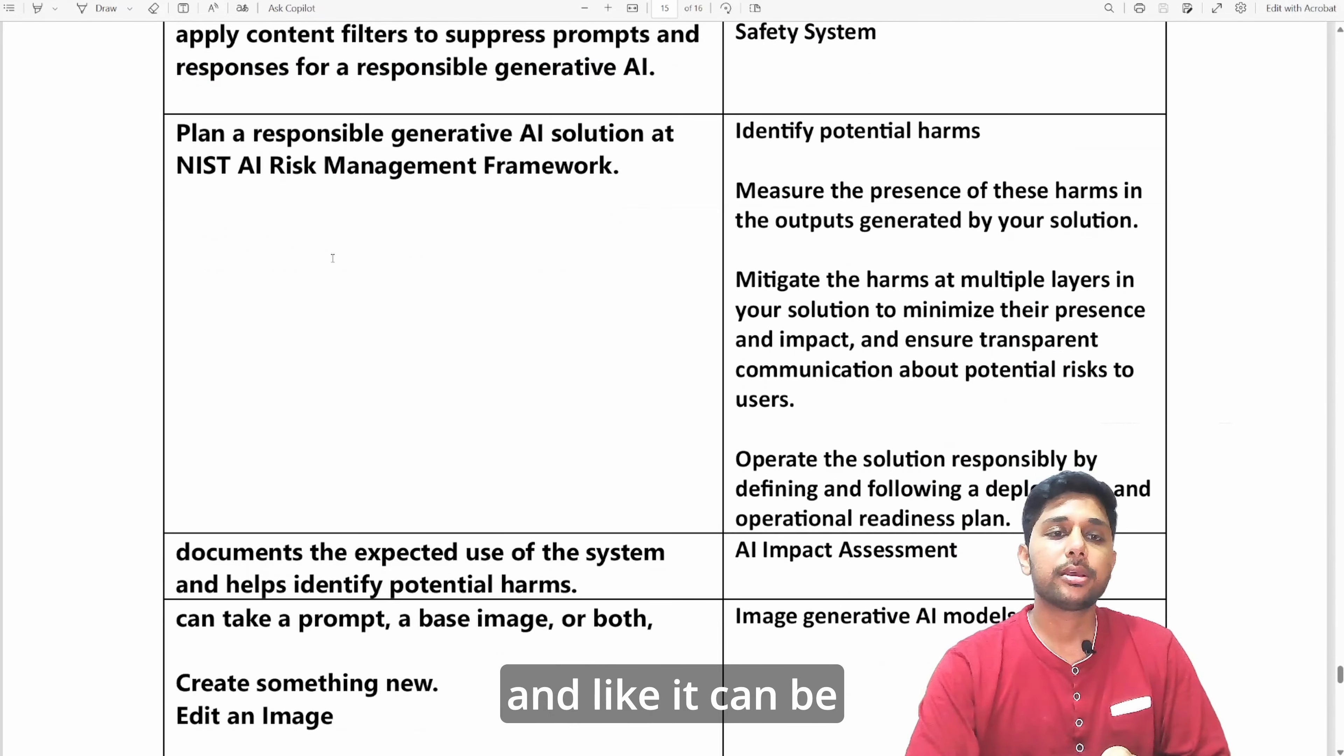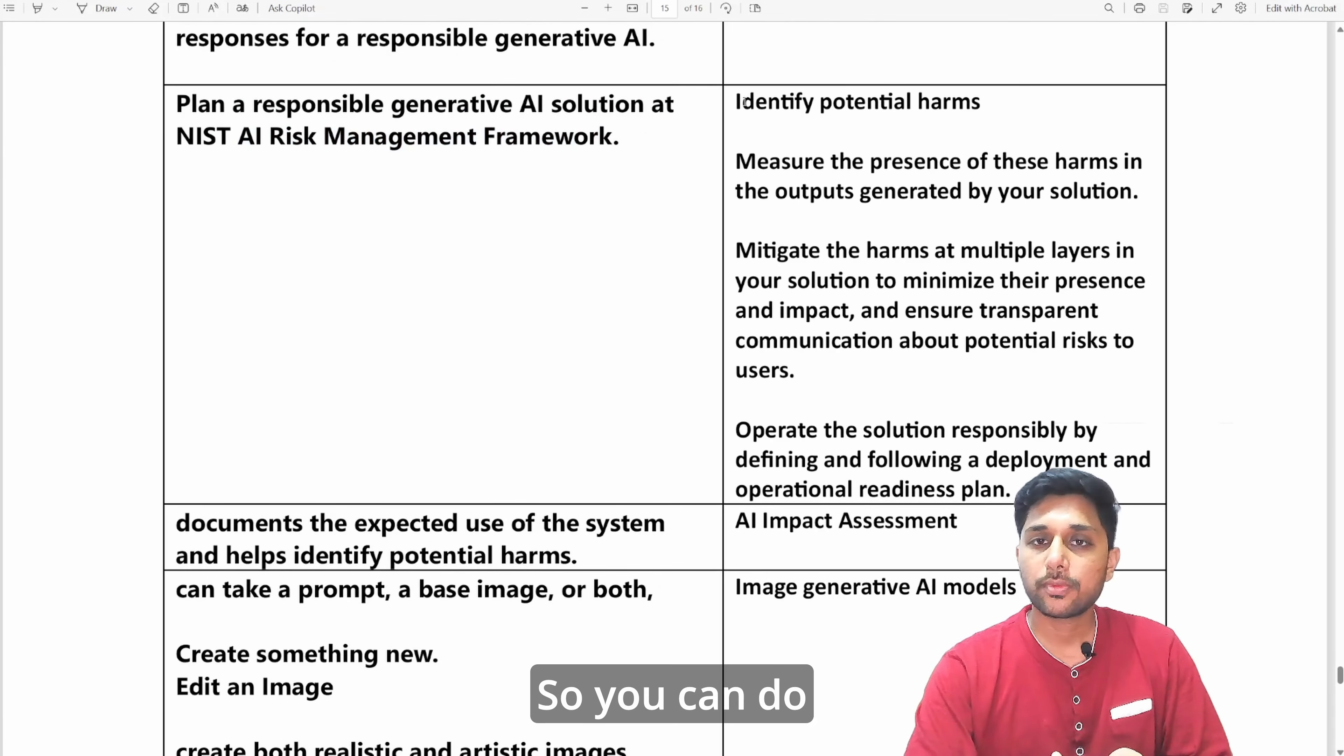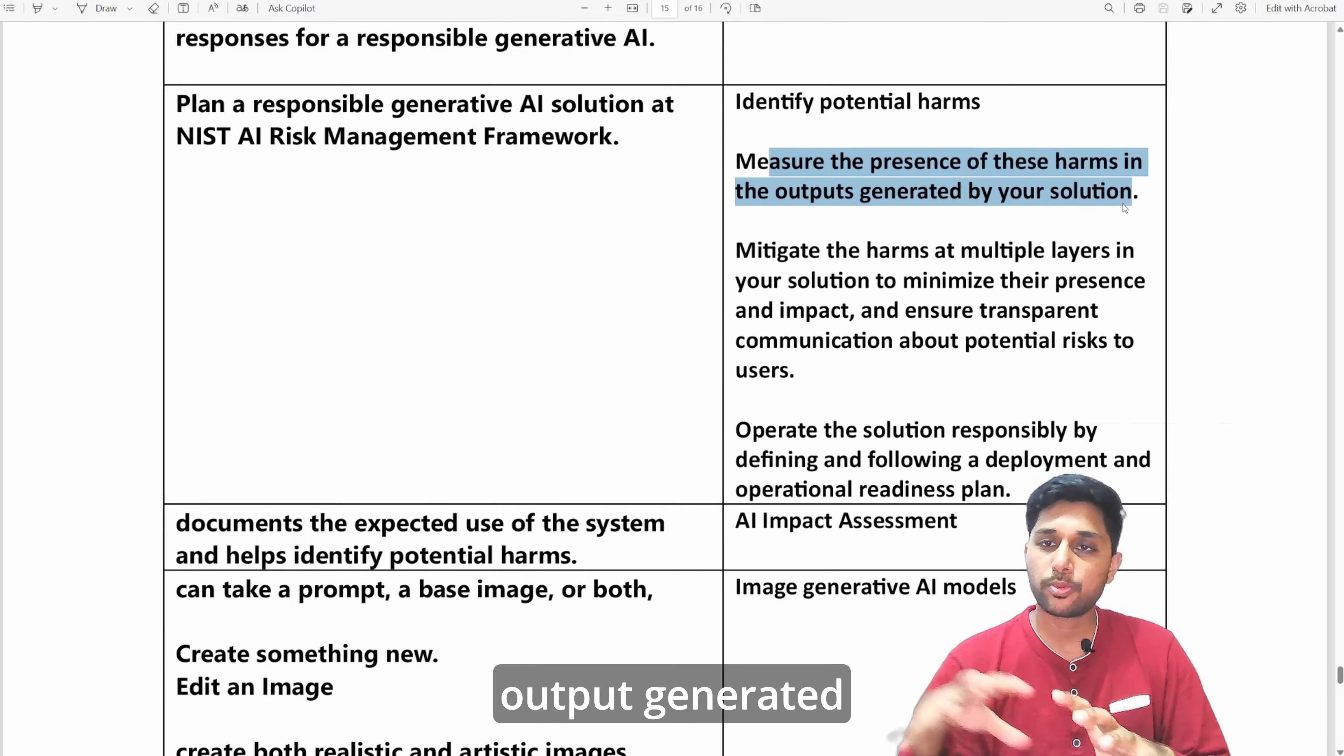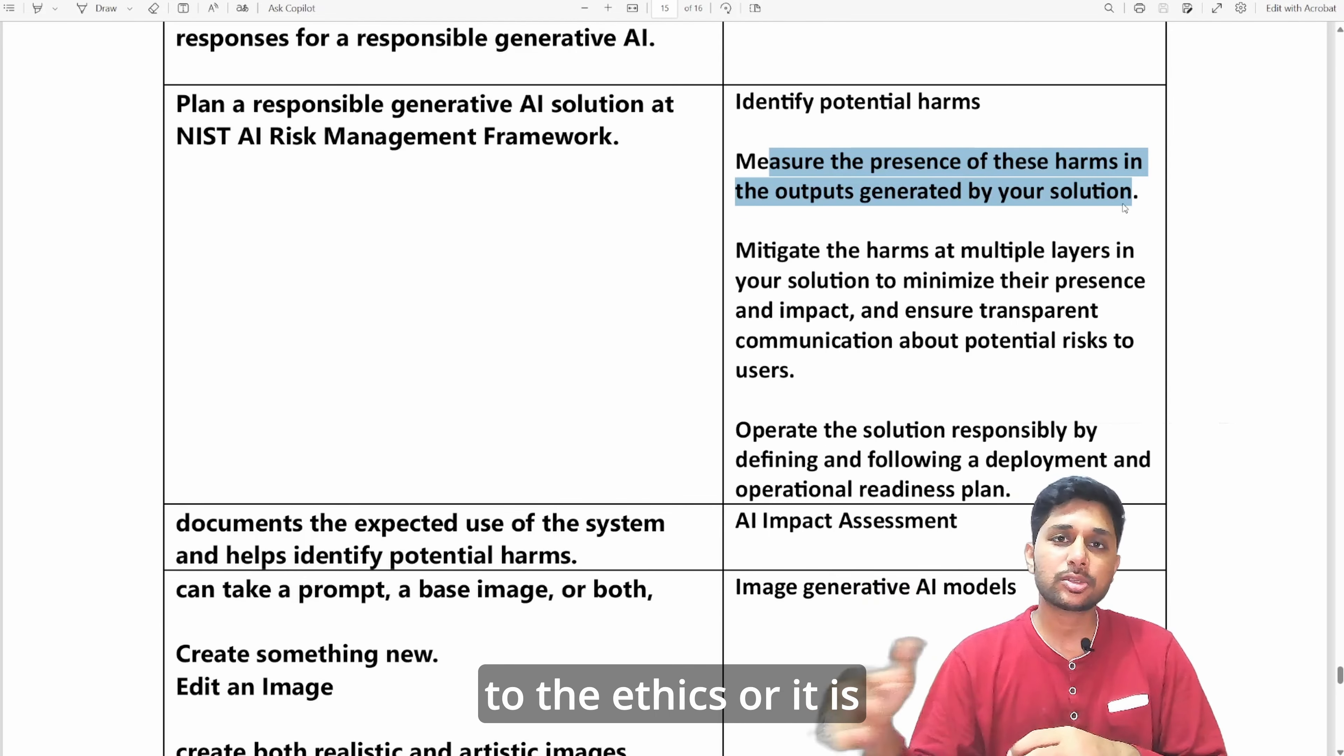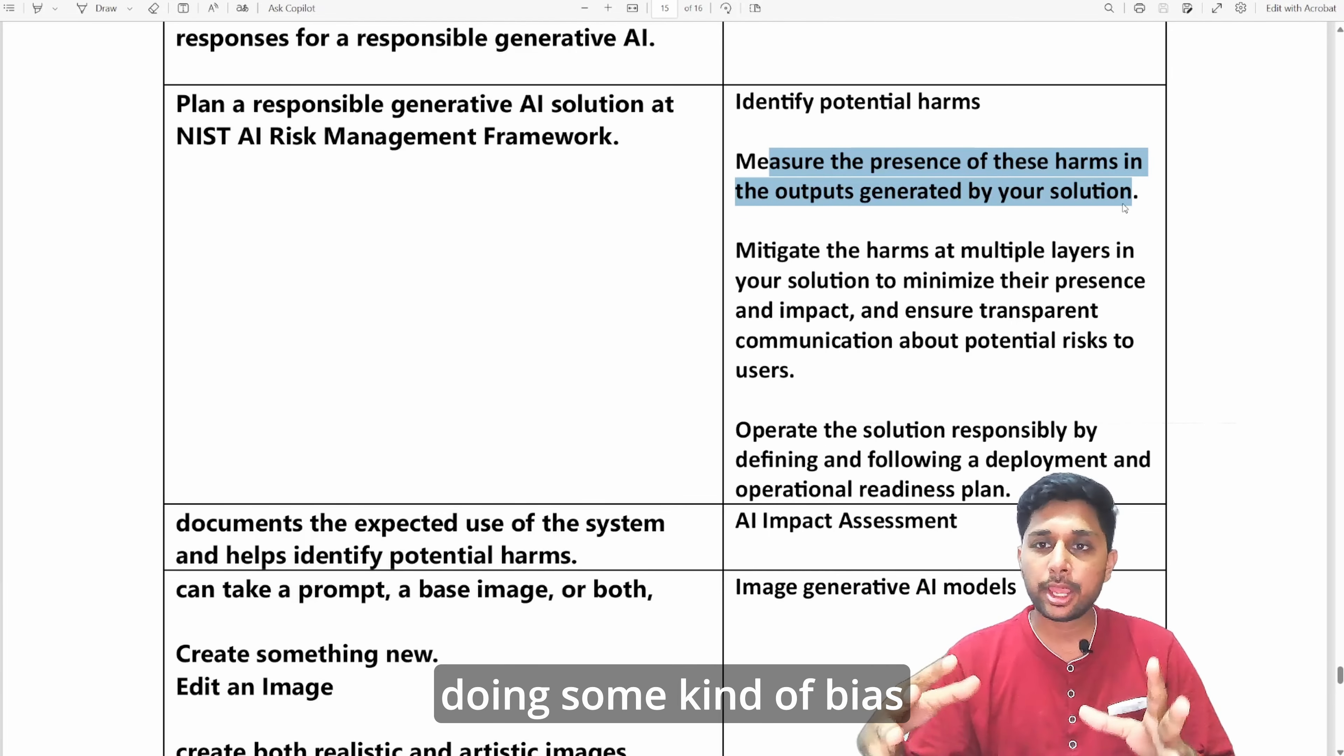It can be asked how you can plan a responsible generative AI solution at NIST AI risk management framework. You can do following these tasks: you can identify the potential harm, you can measure the presence of these harms in the output generated by your solution. This way you can make sure your AI is not generating harmful content which can cause harm to humanity or in general is going against the ethics or doing some kind of bias.